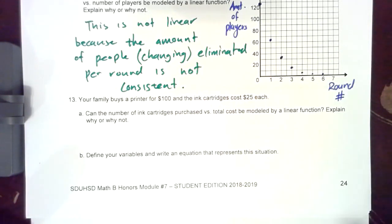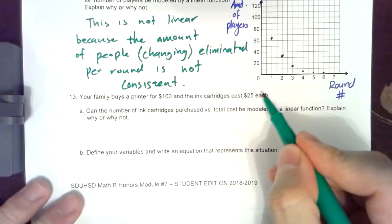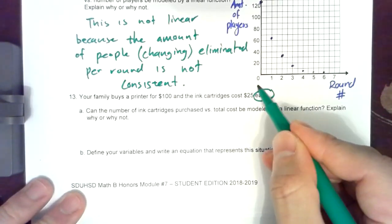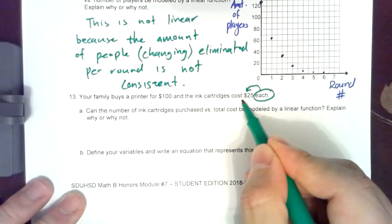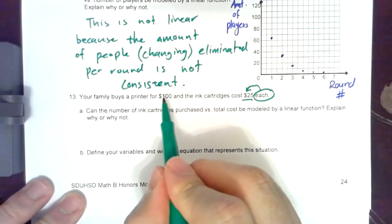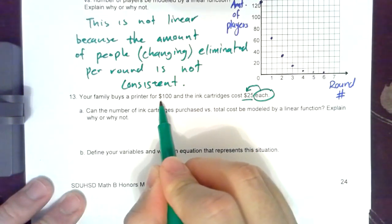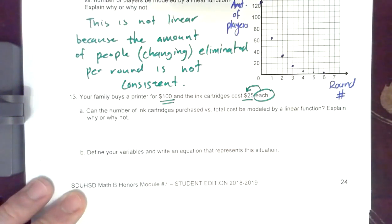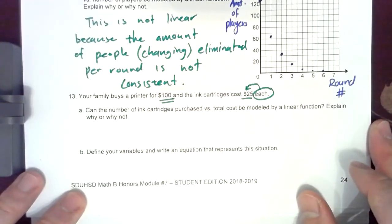It seems like the age-old question of having a rate of change. Notice how there's a keyword of each - the cartridges cost $25 each. And then obviously your printer will cost a certain amount, you don't really have to pay that over time. So once you have a printer you have the printer. Can the number of ink cartridges purchased versus total cost be modeled by a linear function? Yeah.